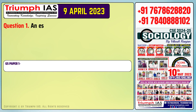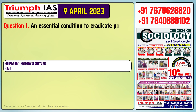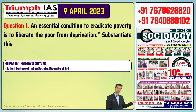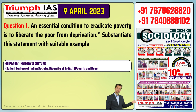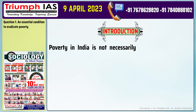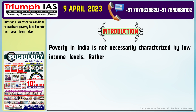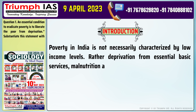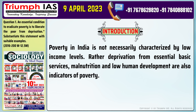Question number one: An essential condition to eradicate poverty is to liberate the poor from deprivation. Substantiate this statement with suitable examples. For the introduction: Poverty in India is not necessarily characterized by low income levels. Rather, deprivation from essential basic services, malnutrition, and low human development are also indicators of poverty.